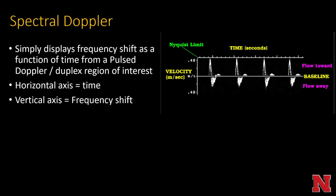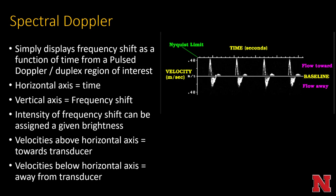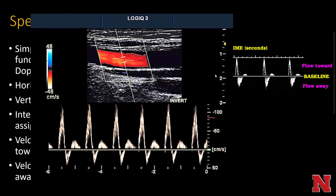The vertical axis represents the frequency shift, and the intensity of a frequency shift can be assigned a given brightness. Velocity toward the transducer is above the axis; away from the transducer is below the horizontal axis. The most common display you'll see in carotid or vascular ultrasound combines a color Doppler image with spectral analysis in the center of the vessel and a spectral waveform tracing below it.